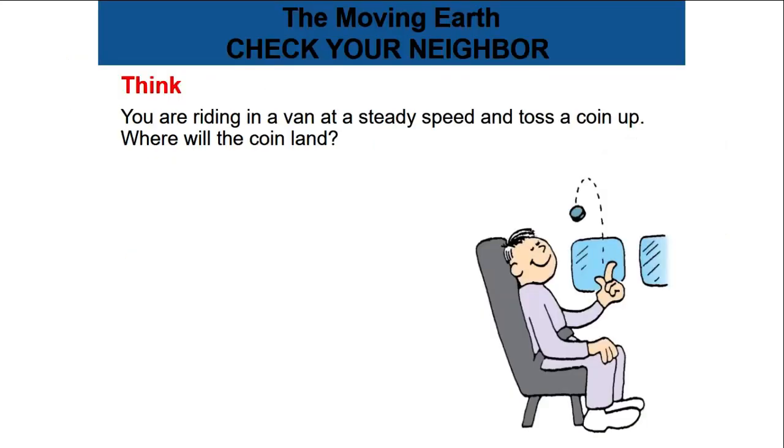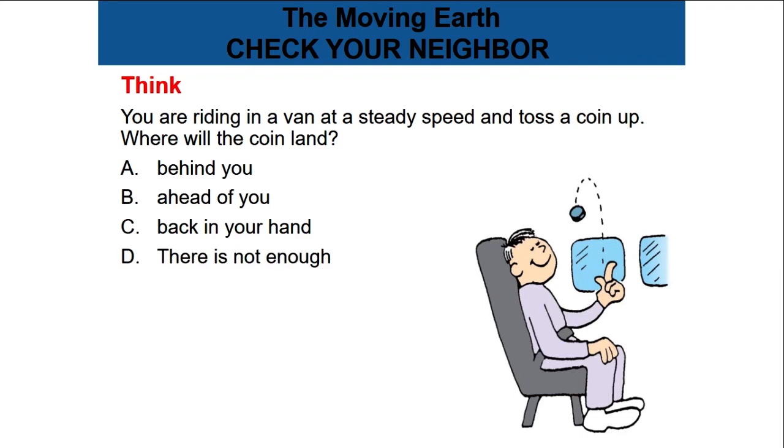Let's answer this question. You are riding in a van at a steady speed, which means the speed is constant and you are moving in a straight line. Now you toss a coin up. Where will the coin land? Is it behind you, ahead of you, back in your hand, or is there not enough information? Think about it.